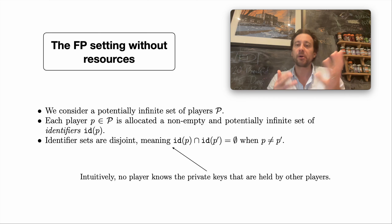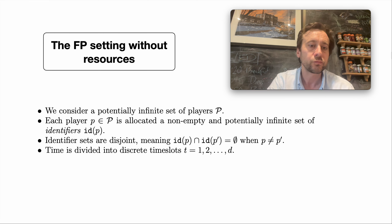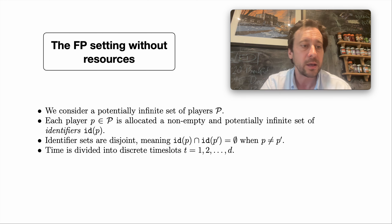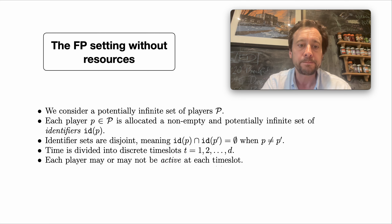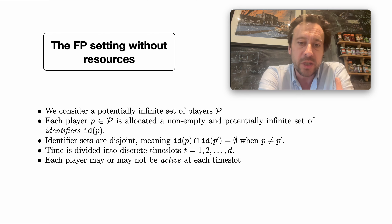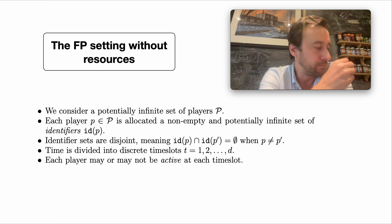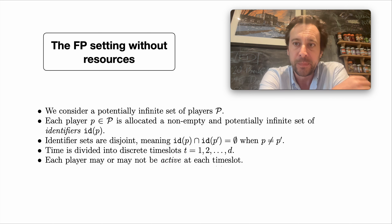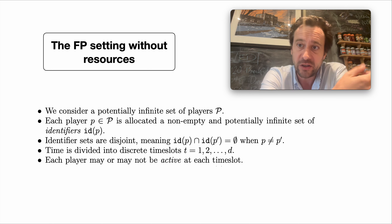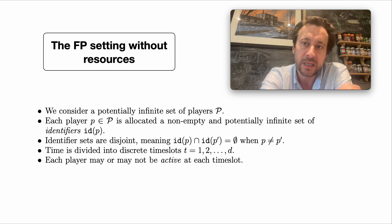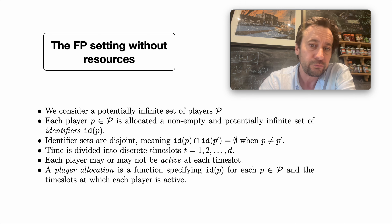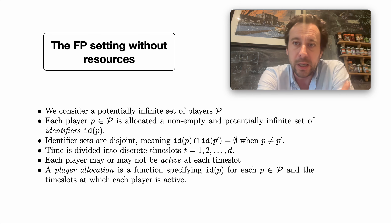Identifier sets are disjoint — intuitively, no player knows the private keys held by other players, although we allow collaboration between Byzantine players. As standard, we assume time is divided into discrete time slots starting at 1 and so on. Each player may be active or inactive at each time slot. If a player is inactive, they don't receive any messages, don't send any messages, and make no state transitions. If a player is active, they can send and receive messages, and if they're honest they'll be carrying out the protocol instructions as they're supposed to.